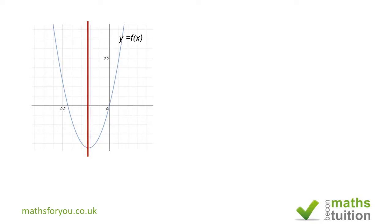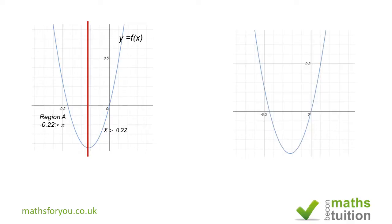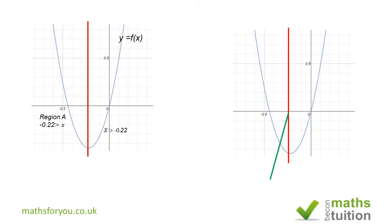We now have two distinct regions: Region A where x has values less than -0.22, and Region B where x has values greater than -0.22. In Region A, as x increases, the y value for the parabola is decreasing, so the y values for the graph of the derivative will be negative up to x = -0.22.